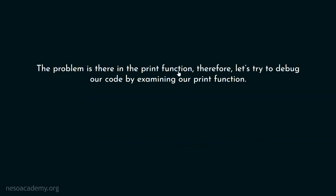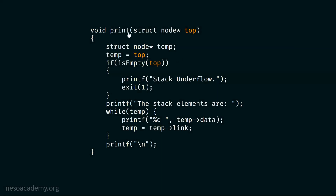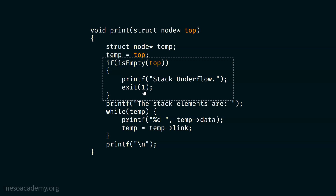The problem is in the print function. Let's try to debug our code by examining the print function. It is very important that we examine our print function so that we could debug our code. Here is the print function — I am checking this condition: if the stack is empty, or if top is equal to null, then print stack underflow and exit from the program with exit failure status. That's what we got in the previous presentation.